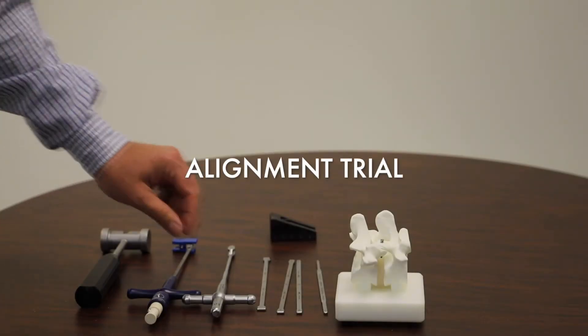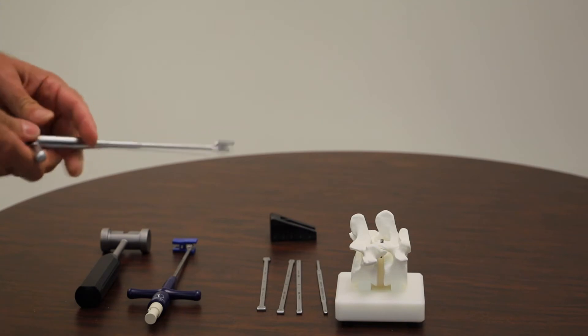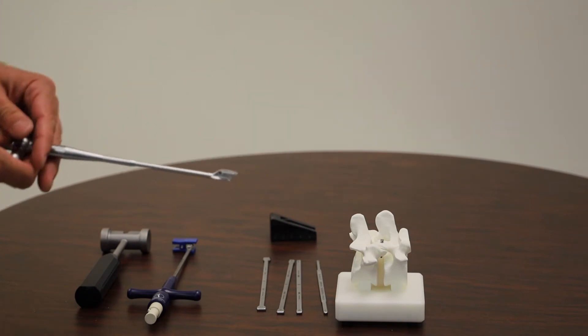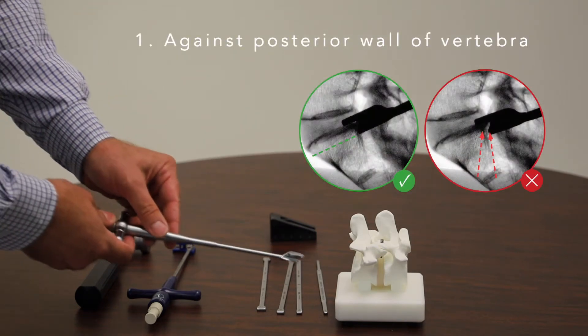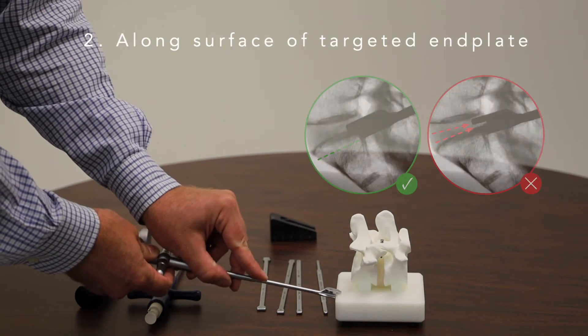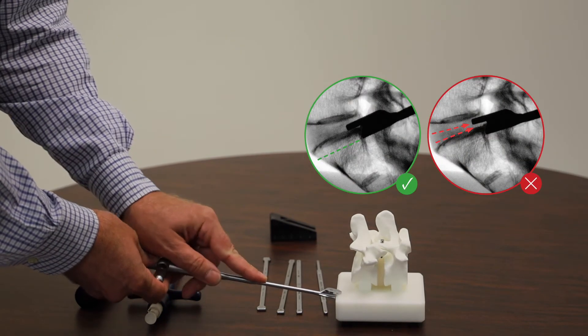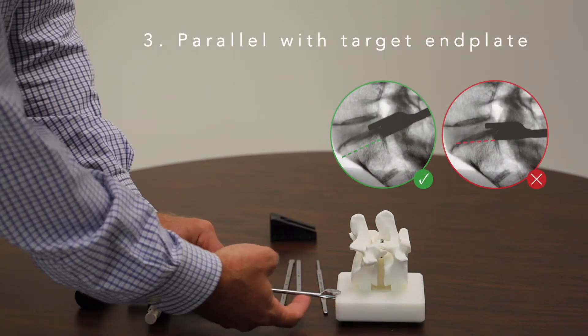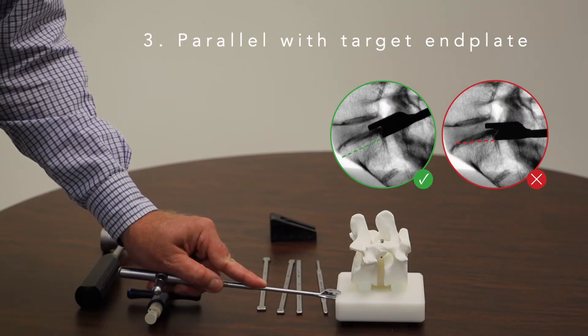Now the alignment trial. The alignment trial simulates the loaded delivery tool. There are three goals with the alignment trial. First is to make sure that you're down against the back of the target vertebra. Second is to make sure that you're on the target end plate. And the third is to make sure that an imaginary line drawn from the bottom of the tool on lateral fluoroscopy never crosses the end plate.